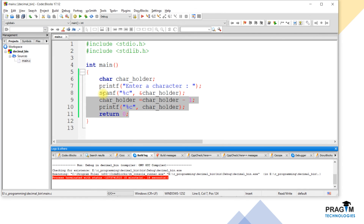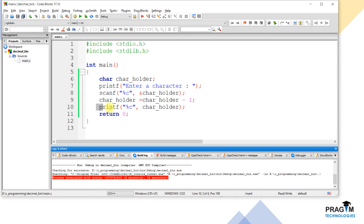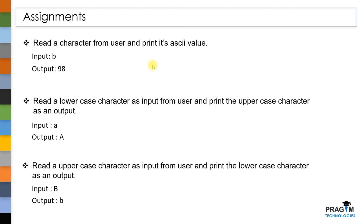From this program, we understood how to read a character input and how to print a character as an output. I would like to suggest you practice these three problems to get more understanding on character type. In the first problem, read a character as input from the user and print its ASCII value as an output.